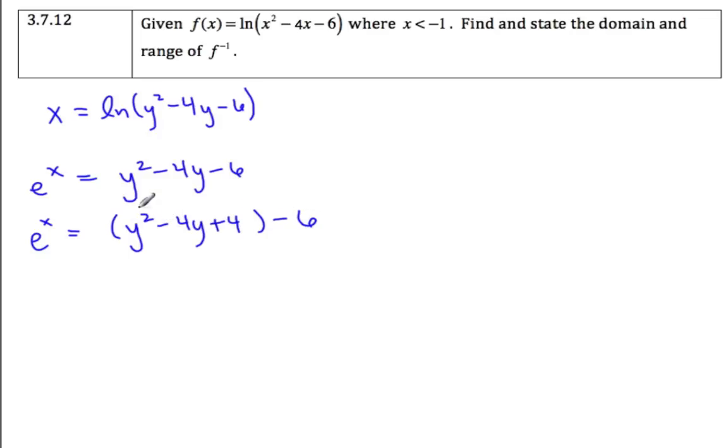Now I just shifted the whole function up 4, so I need to subtract 4 to keep it the same. So that means e to the x is y minus 2 squared minus 10.